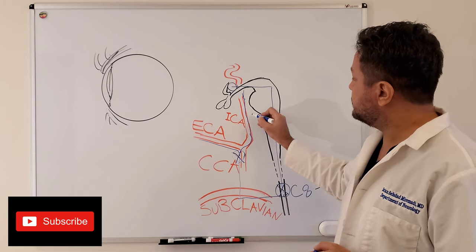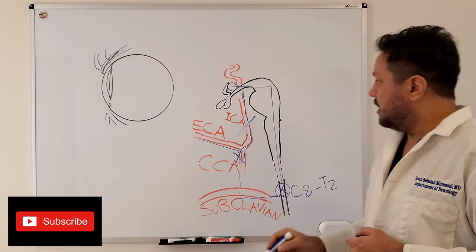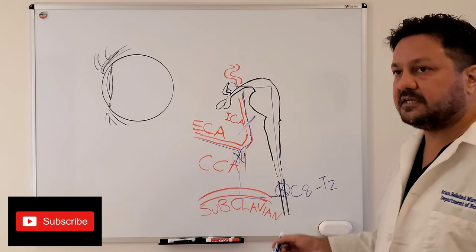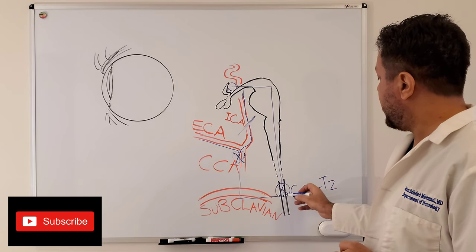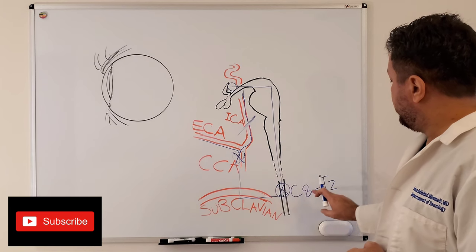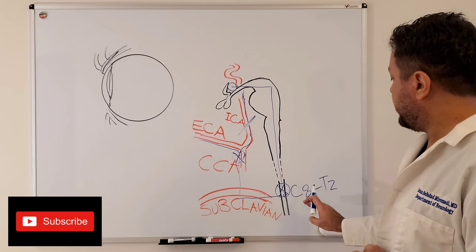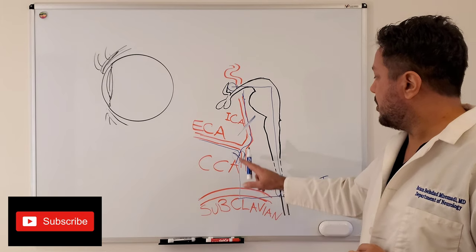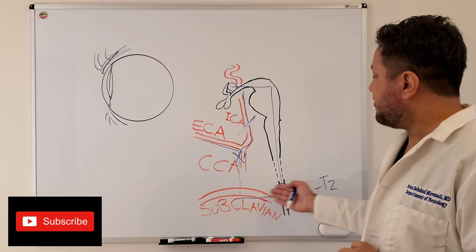So just to review quickly: first order neuron or the central neuron will synapse at the level of the lower cervical spine or the upper thoracic spine at the level of the cilio-spinal center of Budge. The second order neuron or the preganglionic neuron will travel in the neck going up to the superior cervical ganglion, second synapse there.